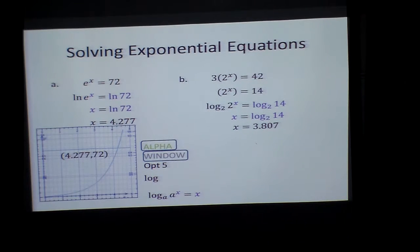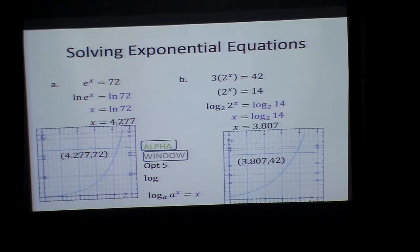Also, I could graph it. If I put y equals e to the x and y equals 72, this is what I would get. And the same here. If I put y equals 3 times 2 to the x and y equals 42, I could graph those and see where they intersect.